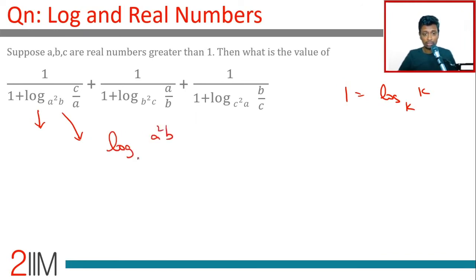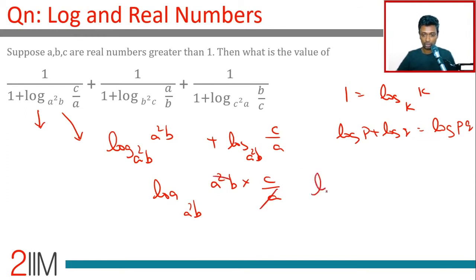a²b to the base a²b. That is 1 plus log(c/a) to the base a²b. Brilliant! Now we know log p plus log q is log of pq. This is log to the base a²b: a²b into c/a. Or this is log(abc) to...